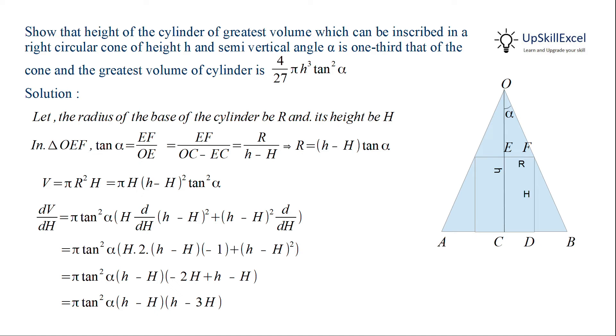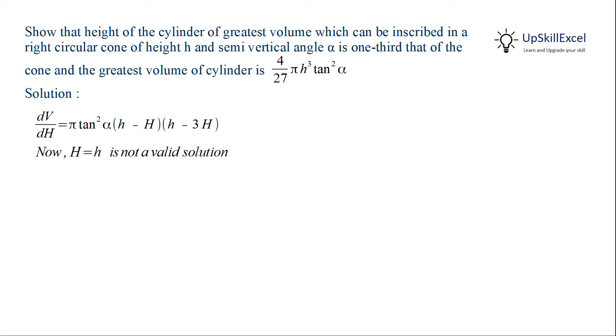Now we will set dV by dH equal to 0 to get height of cylinder equal to the height of cone or height of cylinder equal to one third of height of cone. Now height of cylinder equal to height of cone is not a valid solution. So the only critical point here is height of cylinder equal to one third of height of cone.